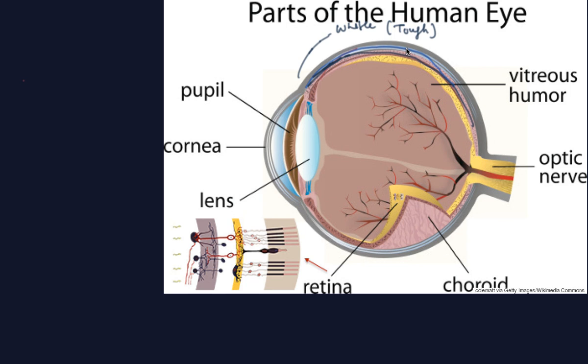The transparent front part is called the cornea. This part which is transparent is the front part of our human eye and it is called the cornea.